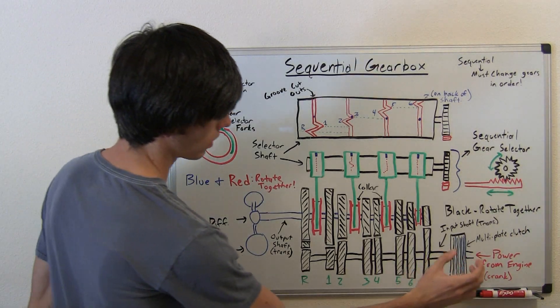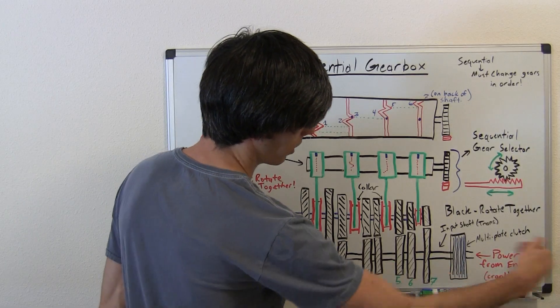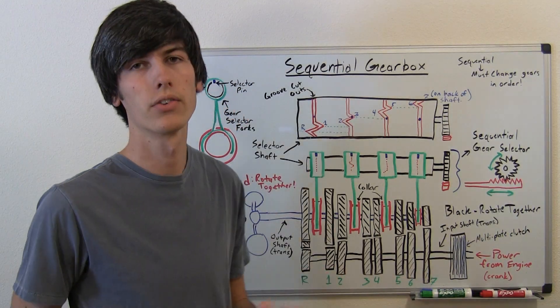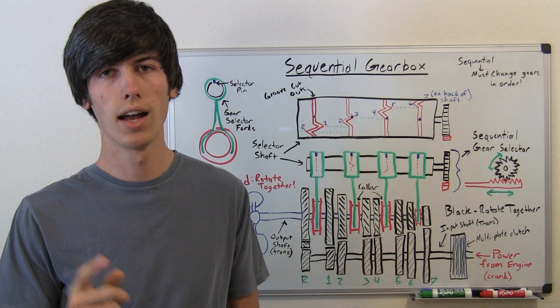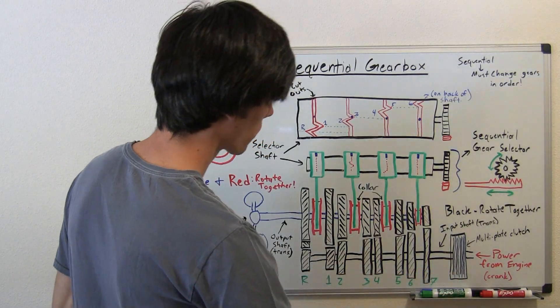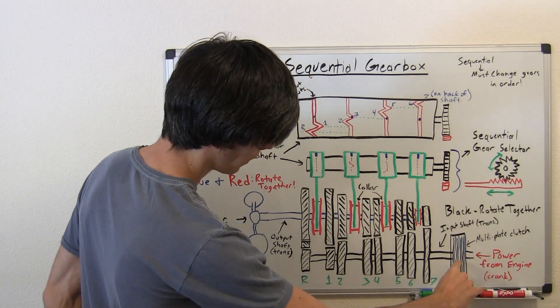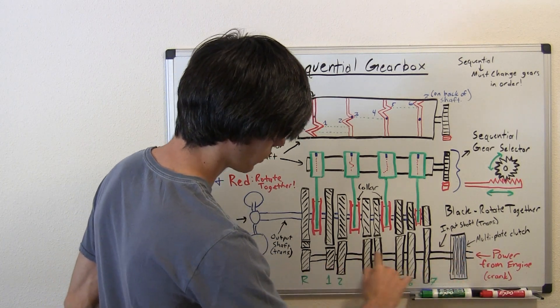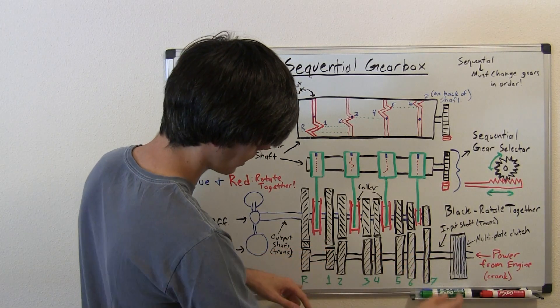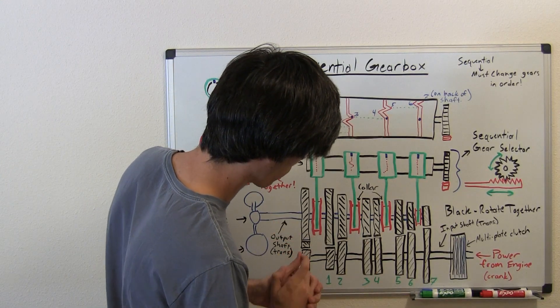So we've got our clutch pack right here. This is connected to the engine. So you've got your power coming from the crankshaft connecting to this multi-plate clutch. Now if you don't understand how multi-plate clutches work, I do have a video on that. So we've got our power coming from the engine, transferring through the clutch, and then it's going to enter the input shaft of the transmission. The input shaft has these eight gears: reverse, and then seven for the seven forward gears.